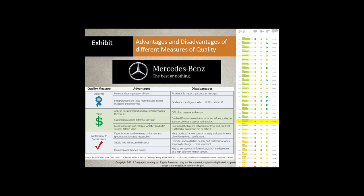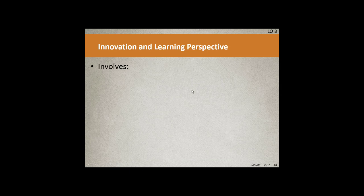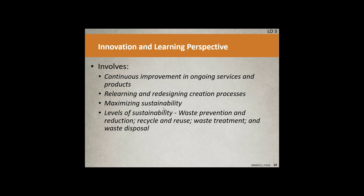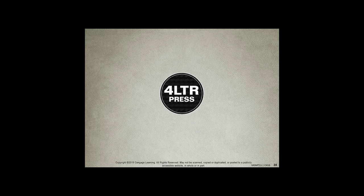Innovation and learning perspective — the last tenet. Continuous improvement in ongoing service and product is involved in innovation, along with re-learning and redesigning the creation process. You have to maintain sustainability. Your author on page 369 breaks this into different areas: good housekeeping, material and product substitution, and process modification — all about waste disposal, waste treatment, recycle and reuse, and waste prevention and reduction. That's the last tenet for sustainability, and that's it for Chapter 16. We're just under an hour this time. I hope you got a lot out of it, and I'll see you on the next one.